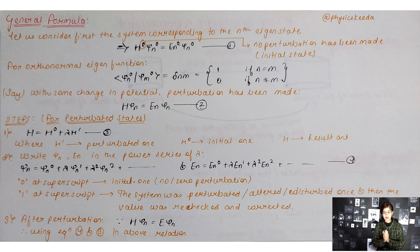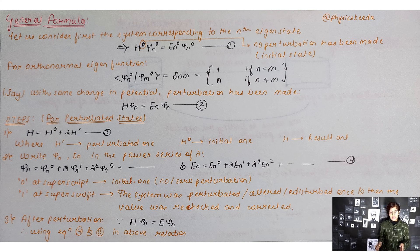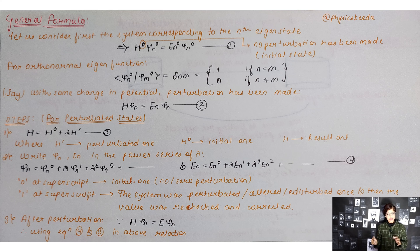We now change the potential slightly, meaning a perturbation has been made, and due to this we get Hψ_m = E_n ψ_m. To proceed, the first step is to write H = H₀ + λH', where H' gives the perturbation, H₀ is the initial Hamiltonian, and H gives the result after perturbation.